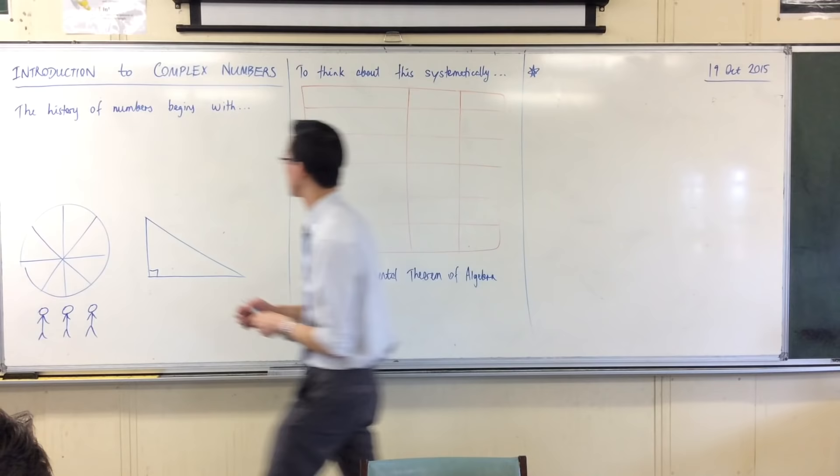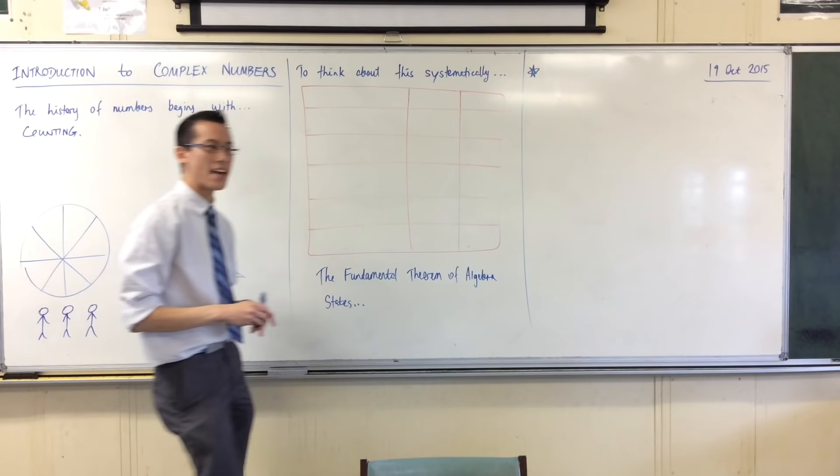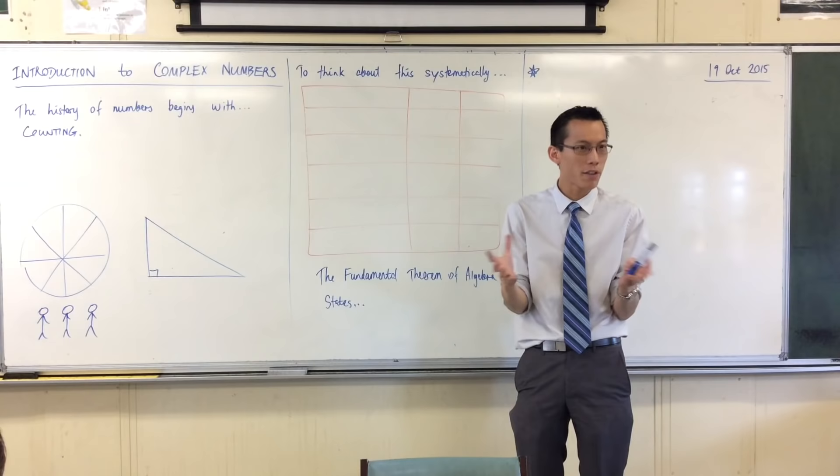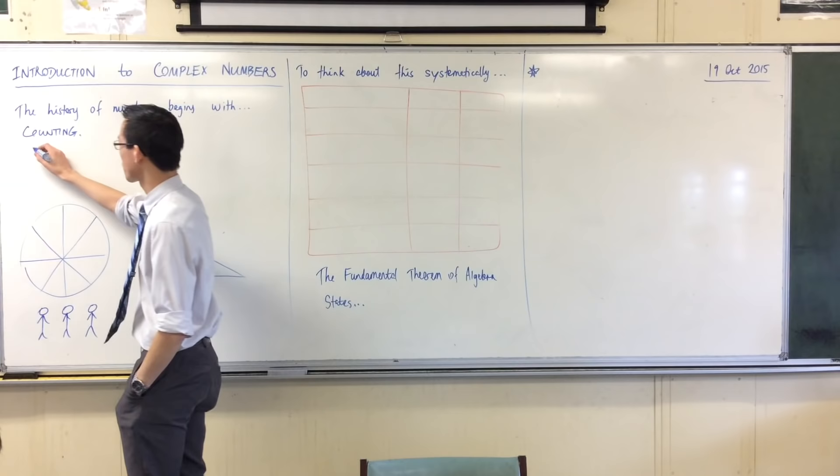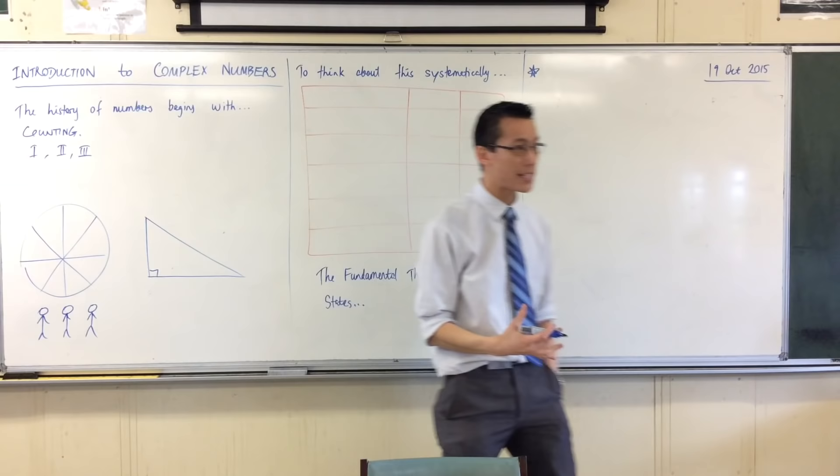Now, counting is still evident. The fact that numbers started with counting is still evident in a lot of things that you take for granted. For example, Roman numerals. The first three numbers are written one, two, three. You can see that counting is built into the representation of our numbers.